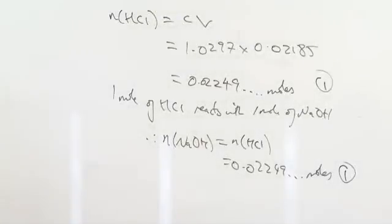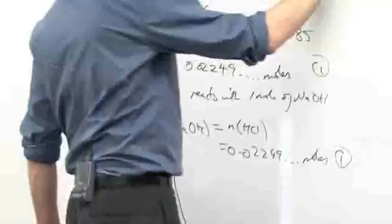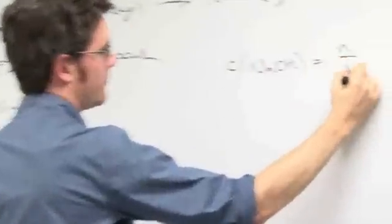The third step is to work out the concentration of the sodium hydroxide. The unknown. So, we'll do it over here. C of sodium hydroxide equals number of moles divided by volume.